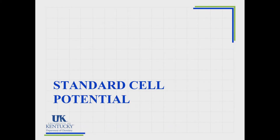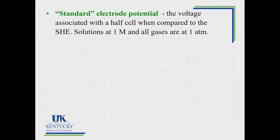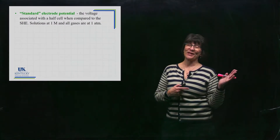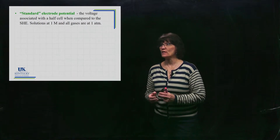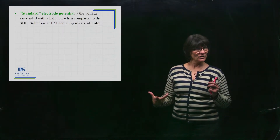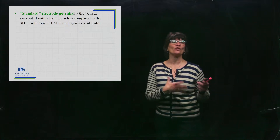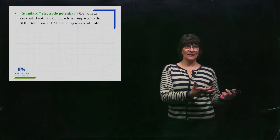Now that we know what a half-cell potential or electrode potential is, we're going to look at the overall cell potential. A standard electrode potential is the voltage of those half-cells as they are hooked up to the standard hydrogen electrode, with one atm for gases and one molar for solutions. You have to make sure that your other half-cells, besides your standard hydrogen electrode, are also under standard state conditions.